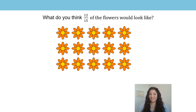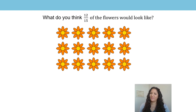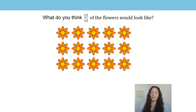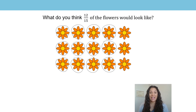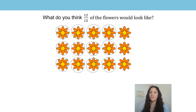Look at the flowers — there are 15 flowers. What is the value of each flower? What do you think 12 fifteenths of the flowers would look like? Can you imagine it? Can you draw it? Have a go now — pause the video and have a think about what 12 fifteenths of the flowers would look like. Each flower is worth one fifteenth, so I've circled 12 of the flowers to make 12 fifteenths. You may not have circled the same flowers, but as long as there are 12 circled, it is correct.